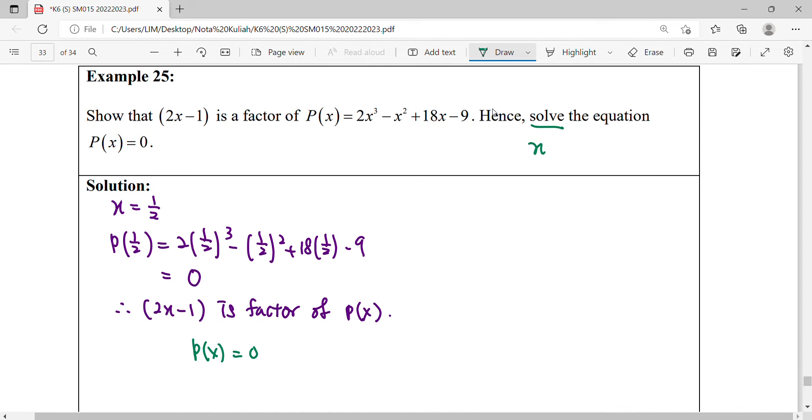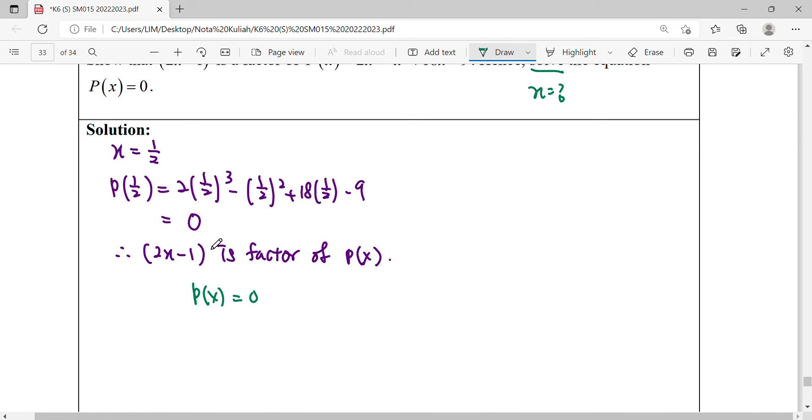When we want to find the value of x, we must have factor form. Our cubic polynomial should have three factors. We only managed to find the first factor, so for the rest of the factors we have to do long division.